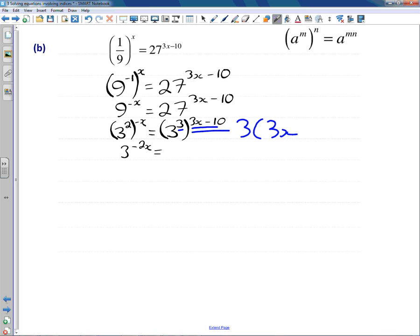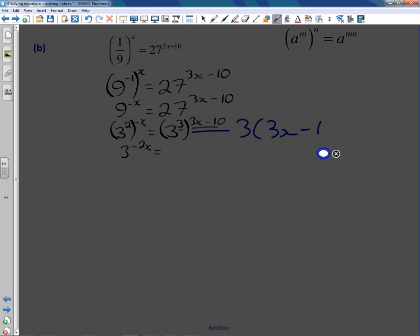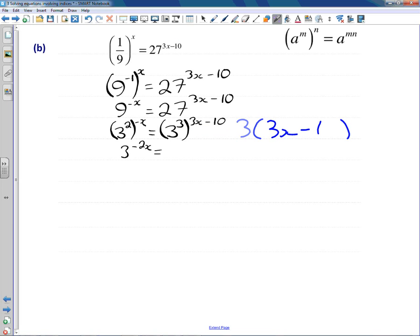But of course we're going to have 3 times the bracket 3x minus 10—apologies I can't write the 10 without doing that—but we've got to multiply those brackets out. So it's 3 times all of that.